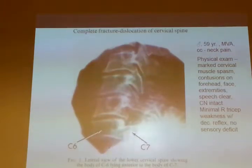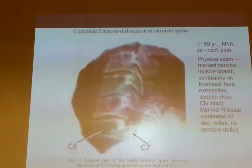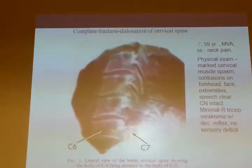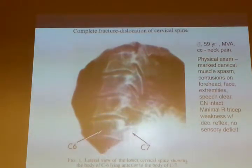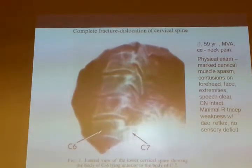Next slide. We have a complete fracture, complete dislocation of the cervical spine. Here is C7, and halfway up C6 is C7. This is a lateral x-ray of the lower cervical spine. So what is your first reaction to this — is this guy going to be moving around? Is he going to be a quadriplegic?